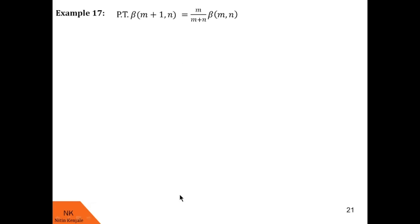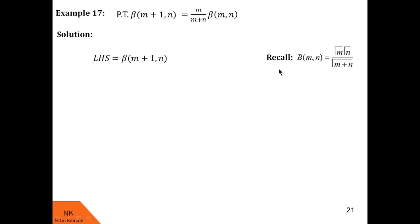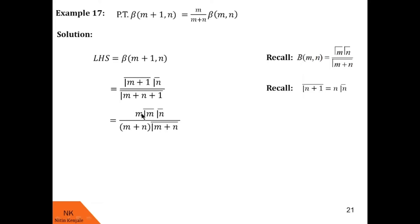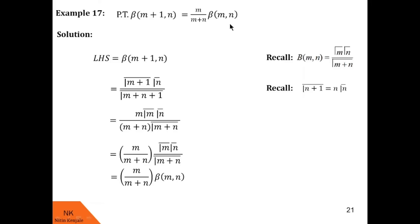Let us see another example: prove that beta of m+1 comma n equals m upon m+n into beta of m comma n. LHS is beta of m+1 comma n. By the beta-gamma relation, this equals gamma(m+1) into gamma(n) upon gamma(m+n+1). Using the property of the gamma function: gamma(m+1) becomes m into gamma(m), and gamma(m+n+1) becomes m+n into gamma(m+n). We put m upon m+n in one bracket, and outside we have gamma(m) into gamma(n) upon gamma(m+n), which is nothing but beta of m comma n. So we have obtained the required RHS. Hence proved.